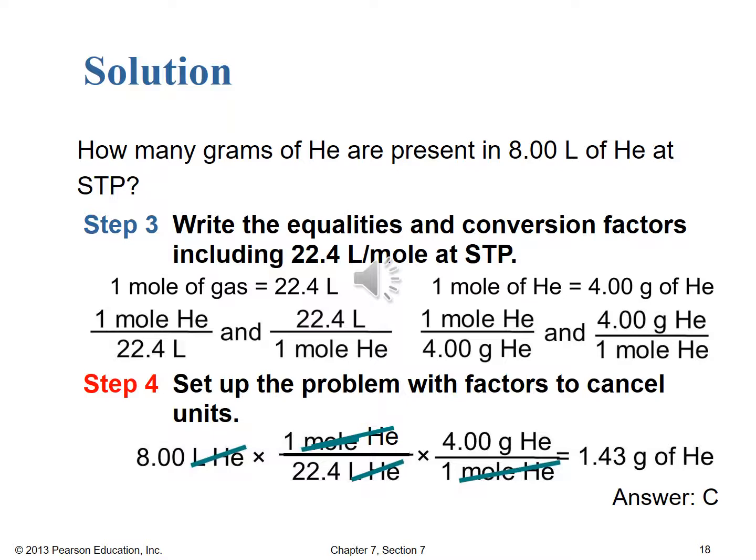Starting with our 8.00 liters of helium, we need liters in the denominator, so we use 1 mole of helium over 22.4 liters. Then we multiply through by 4.00 grams of helium over 1 mole of helium, arriving at a final value of 1.43 grams of helium — answer choice C. Hopefully that's the one you selected because you did all the work correctly. If it's still not clear where you went wrong, please do reach out so we can get you back on track.